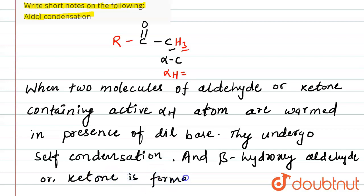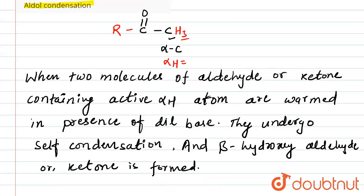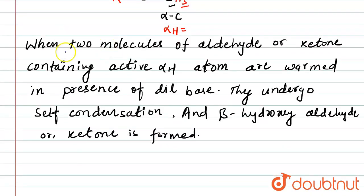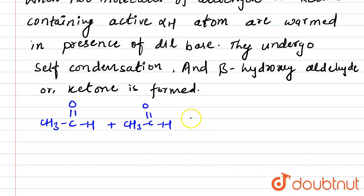So this is the short notes about aldol condensation. How does this reaction happen? We have to take two moles of aldehyde. Let's suppose I am taking this one—two molecules. So these two molecules of aldehyde participate in the aldol condensation in basic medium.